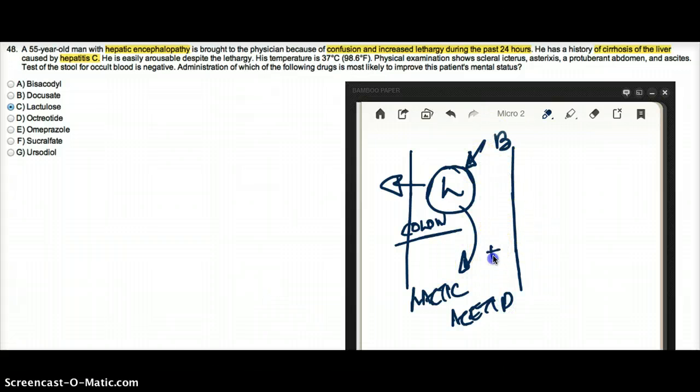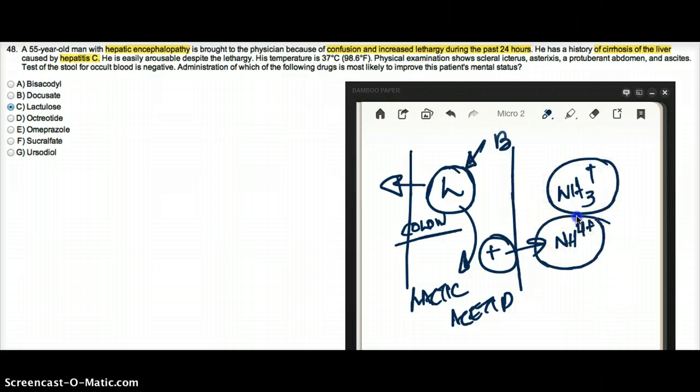So it's going to make an acidic pH. Now the acidic pH is going to favor the formation of NH4 plus from NH3. Now NH3 is absorbable, but NH4 is not absorbable. So it gets trapped in here and then it gets excreted through the stool.